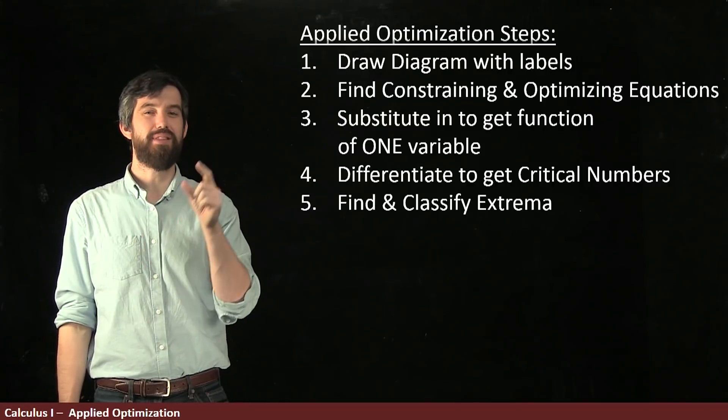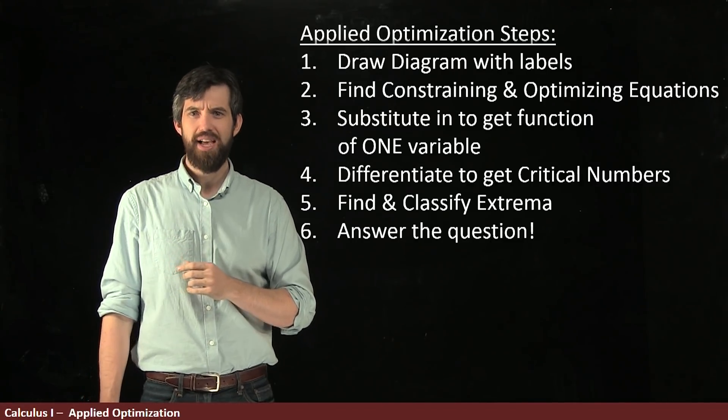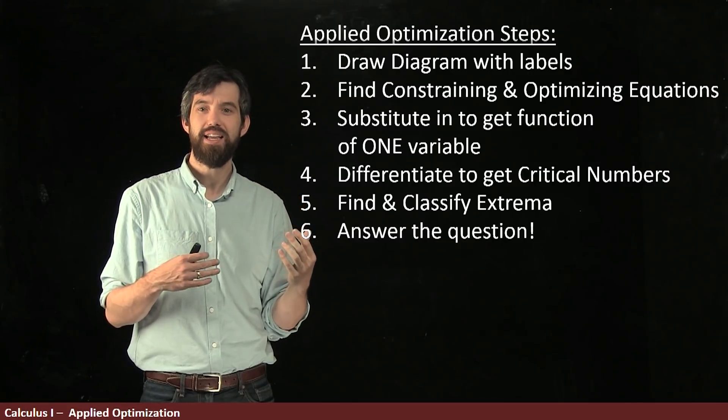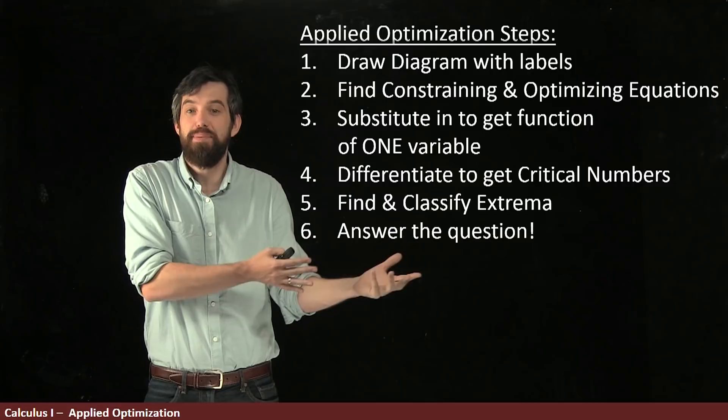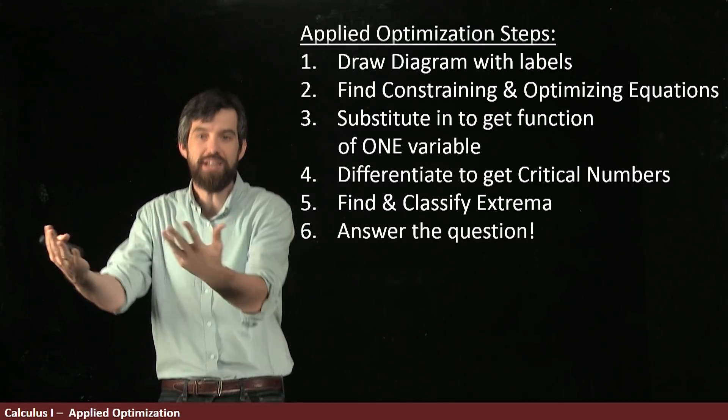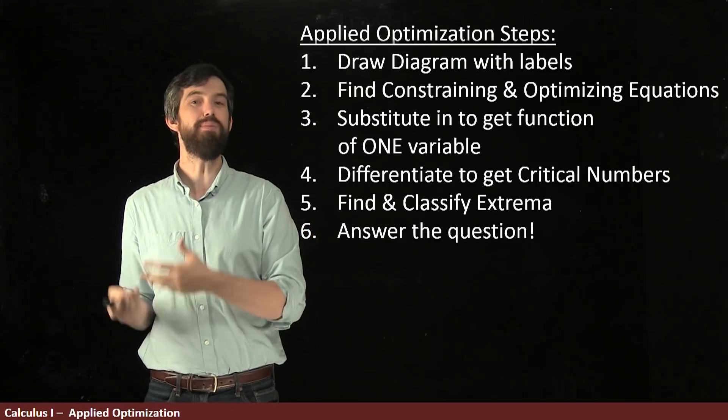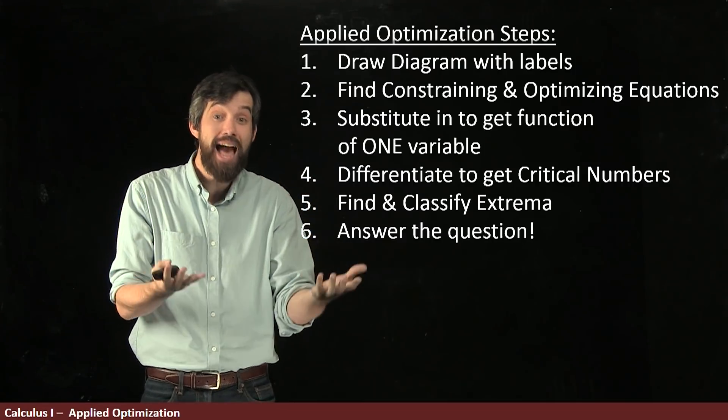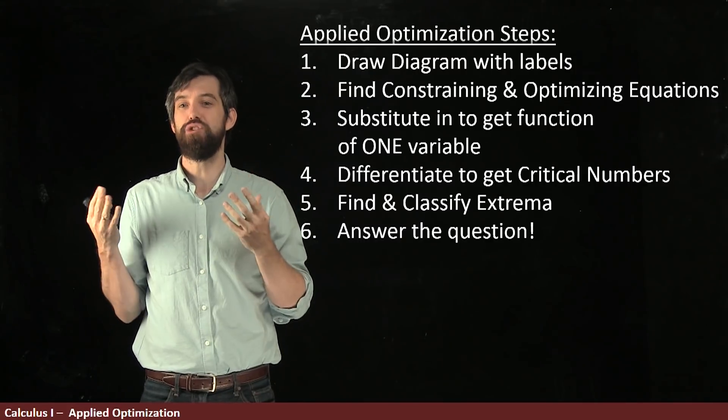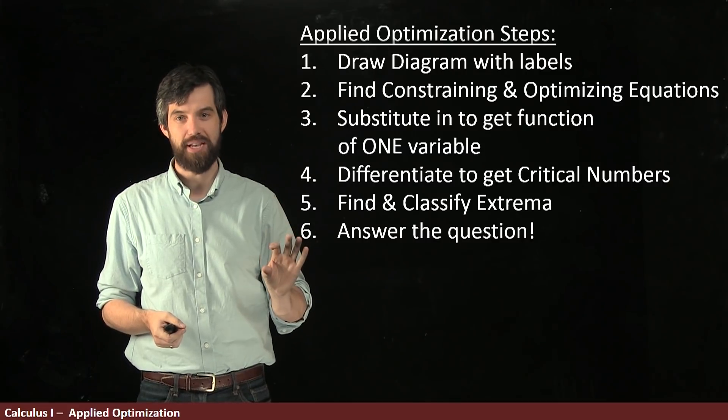And the final point is kind of a little minor one. It seems really obvious. I'm going to call it answering the question. And the reason I put this here is that different versions of the problem will often ask different types of things. In this case, I asked for the dimensions. That meant I wanted both the L and the H. Sometimes the question might ask for just the L, or maybe you would ask, what volume do you get, not the dimensions of the box? So always make sure to carefully read the problem and answer the exact question that the problem asked.